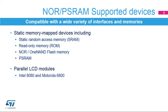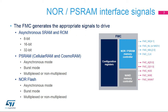The FMC controller supports a wide variety of devices and memories. It interfaces with static memory-mapped devices including SRAM, read-only memory or ROM, NOR or NAND Flash memory, and PSRAM. Furthermore, the FMC interfaces with parallel LCD modules supporting the Intel 8080 and Motorola 6800 modes and is flexible enough to adapt to various LCD interfaces.